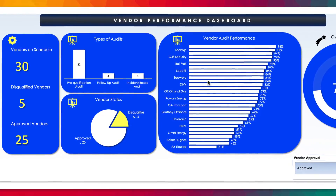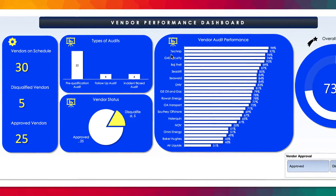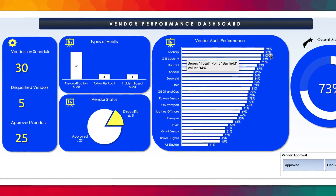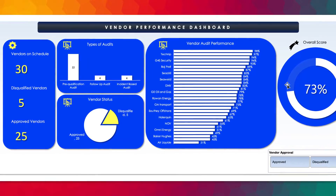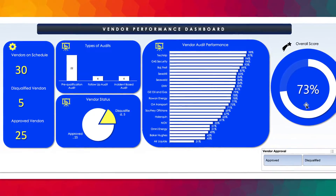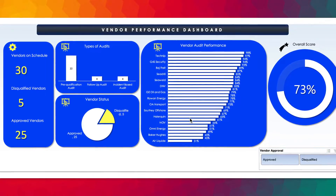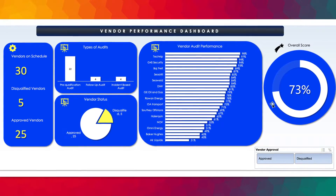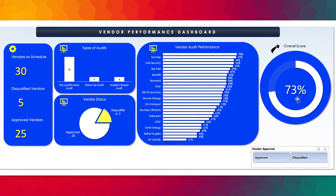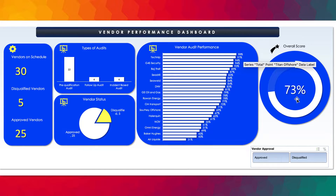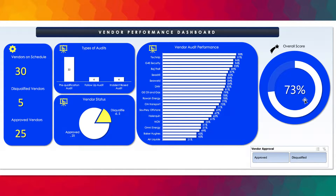And then there's vendor performance. You can see TechNip is topping the list with 98 points. Here is the overall score as far as our vendors are concerned. The goal is that you want to achieve 100% if possible, and you want to make sure that all vendors are really doing well so that you can have a higher overall vendor performance score.